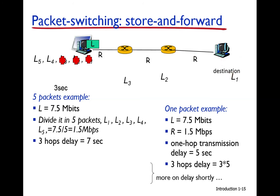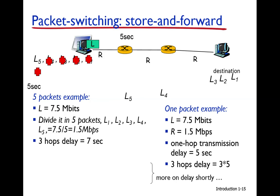In the fourth second, L4 is transmitted from the source, and L3 and L2 move forward through the routers. In the fifth second, L5 arrives at the first router. In the sixth second, L5 is moved from the first router to the second router. In the seventh second, L5 reaches the destination. All five packets — L1 through L5 — are received in 7 seconds.